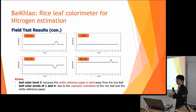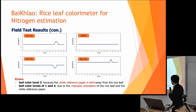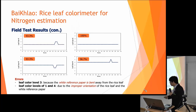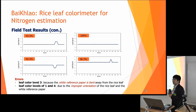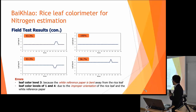We tried to make it easy for everyone to use, so we didn't fix anything about it — just plain white paper. As you can see, for leaf color level three, the white reference paper has some error. This is because when people take a photo, the white reference paper is bending, making our reading incorrect. For levels one and four, errors are due to improper rotation of the rice leaf and the white paper.